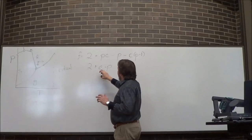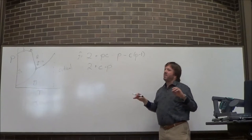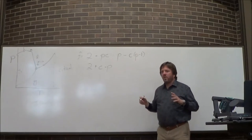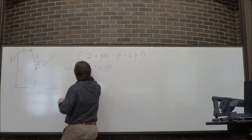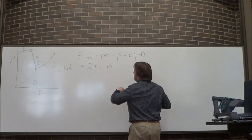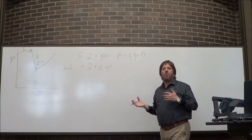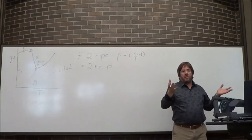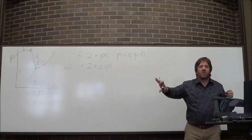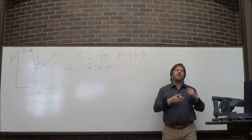The reason the Gibbs phase rule is useful is when you have more than one component. For ethanol and water, I would have 2 + 2 − 1, so that's 3. That's temperature, pressure, and then mole fraction — depending on water or ethanol, probably the mole fraction of ethanol. Those are the three things I could change.